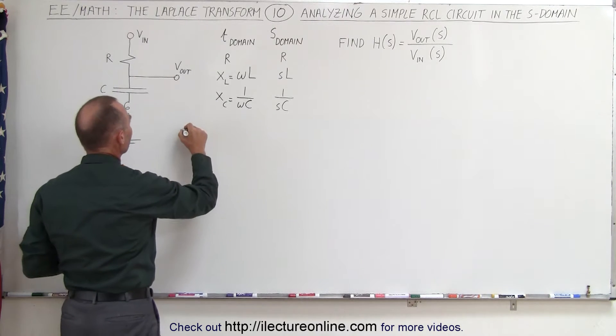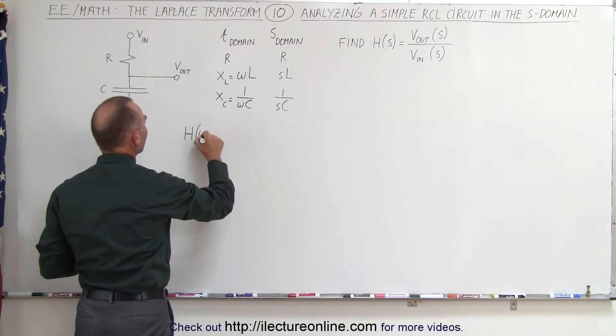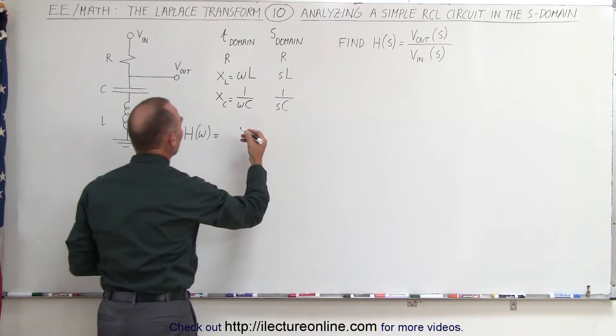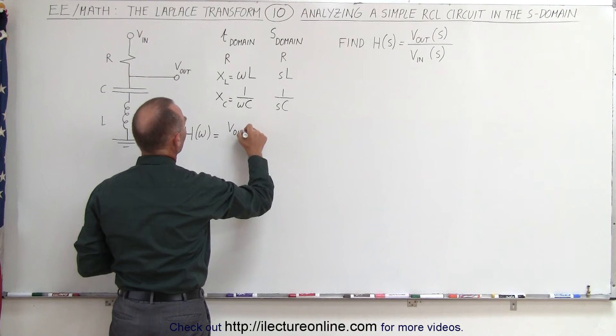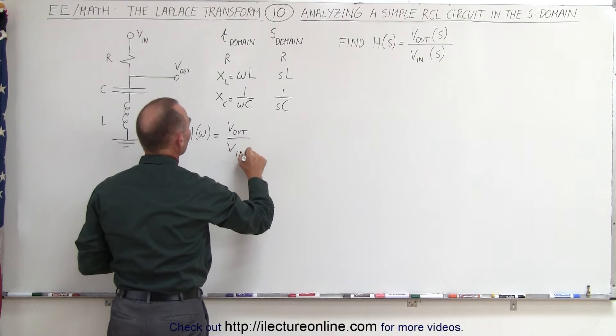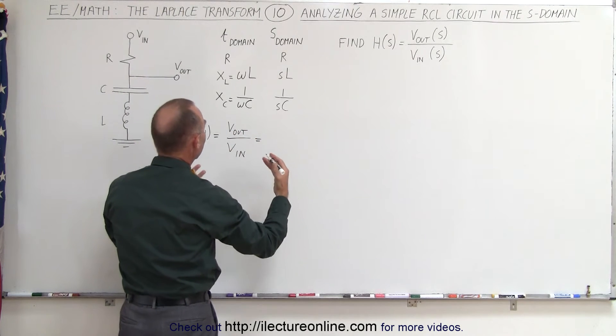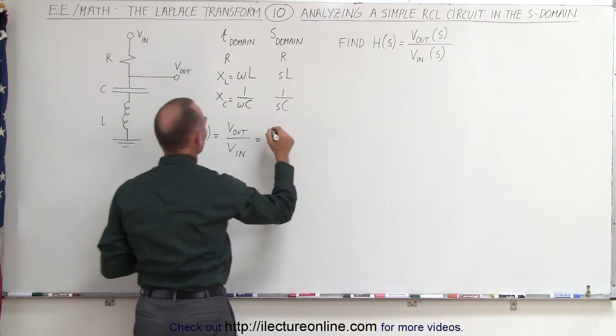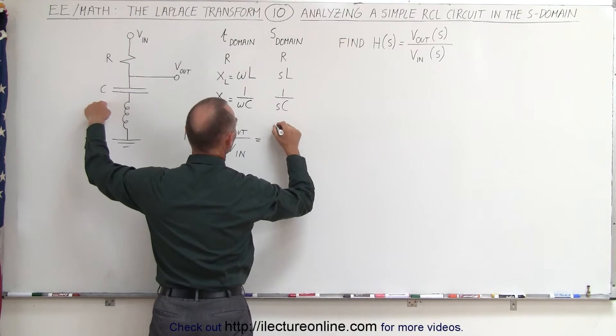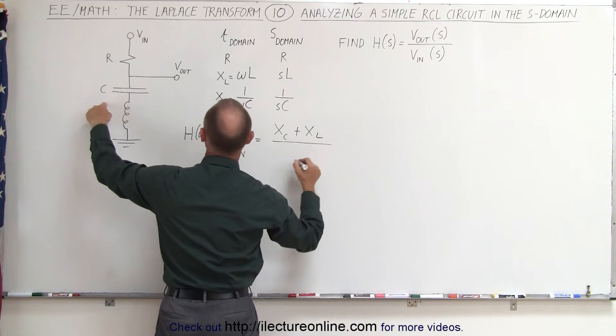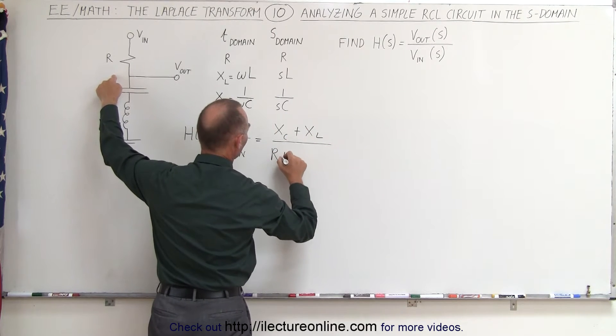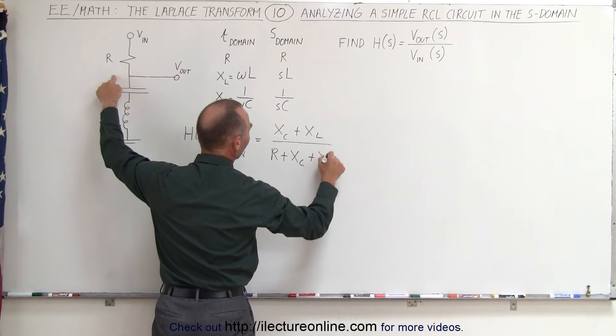So we can say that H in the frequency domain, that's a function of the frequency, is going to be equal to the ratio of V out divided by V in, which is going to be equal to the ratio of the reactance of the output voltage, which is going to be X sub C plus X sub L, divided by the resistance plus X sub C plus X sub L.